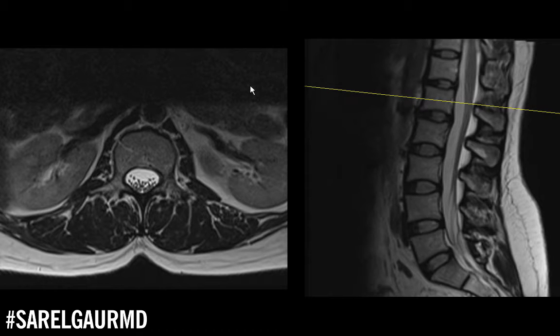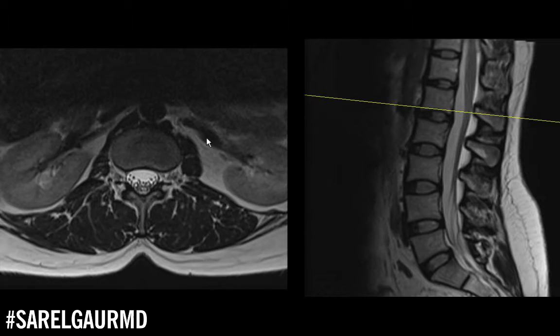The key to understanding lumbar spine MRI is to understand the nerves, the nerve tissue, and the overall architecture of that nerve tissue. The goal for 90% of these studies is really to evaluate for mass effect or impingement upon nerves as a cause for back pain. So in order to do that, you have to understand the anatomy of those nerves.